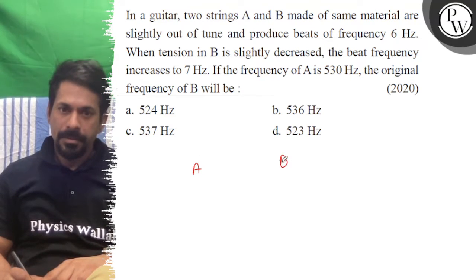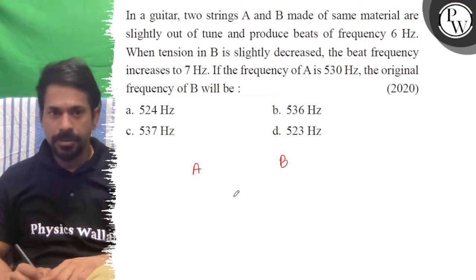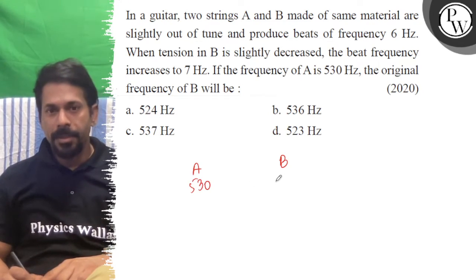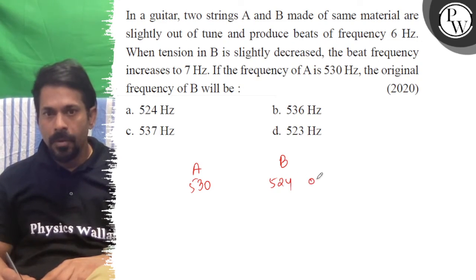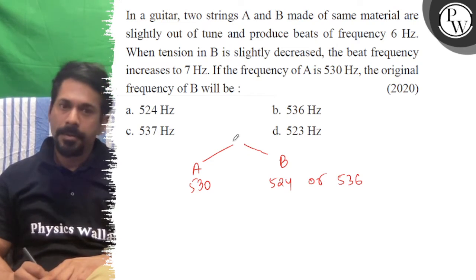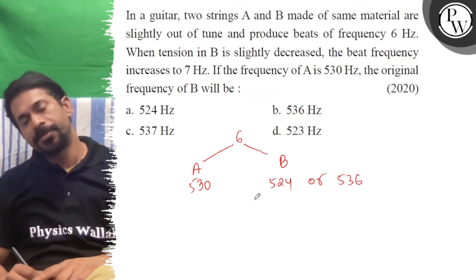So A and B, they are two different sources of sound. A has 530 and B may be 524 or 536 because they are producing 6 beats per second.